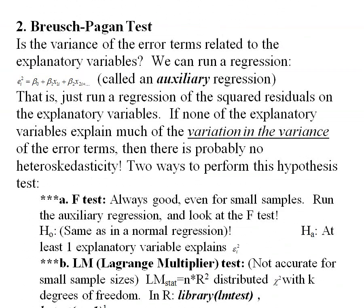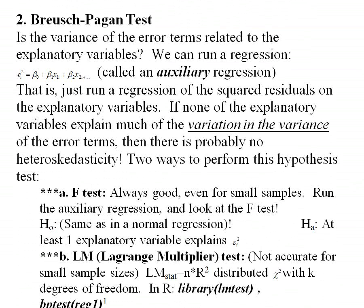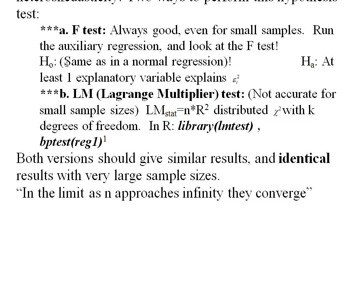Where we left off last time, we were talking about the Breusch-Pagan test, where the Breusch-Pagan test runs an auxiliary, or a second, regression. You take your regression that you're interested in, take the squared residuals from that regression, and then run a regression: can I explain the size of those squared residuals with another regression using the same explanatory variables as before? If you can explain the squared residuals with those explanatory variables, that tells you there is a relationship between your variables and the size of the residuals. Two ways to do a hypothesis test are an F-test — just look at the F-test for that auxiliary regression of residuals squared as a function of your explanatory variables.